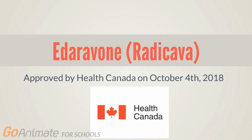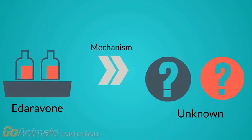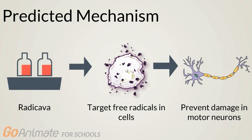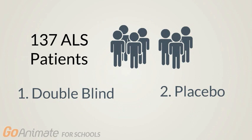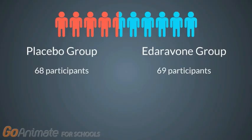More recently, another drug called edaravone, also known as Radicava, was approved by Health Canada on October 4, 2018, though it is still not widely available. The specific mechanisms behind edaravone are still unknown, but it is believed to target free radicals in the cells to prevent damage in motor neurons. A double-blind, placebo-controlled trial was conducted on 137 Japanese ALS patients — 68 received a placebo while 69 received a daily injection of 60 milligrams of edaravone.